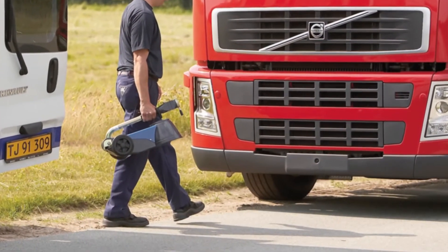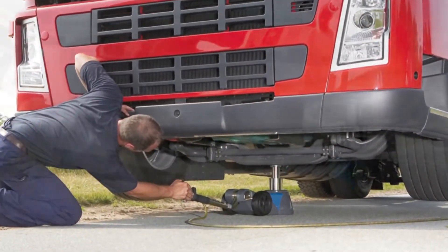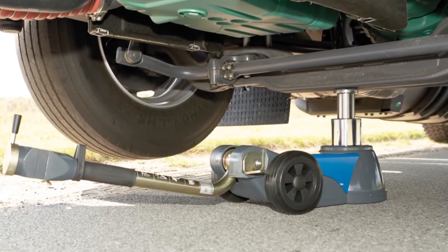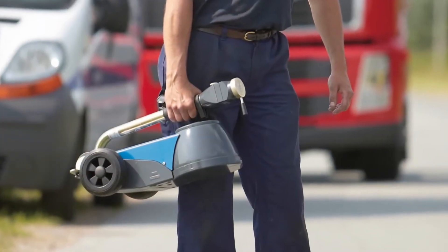Thanks to the low minimum height of 161mm, you can easily place the jack under vehicles such as lorries and buses. Despite its low weight, the jack offers a lifting capacity of 25 tonnes.